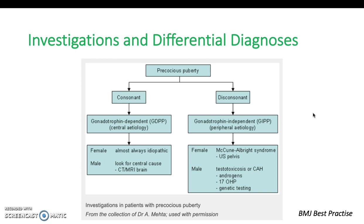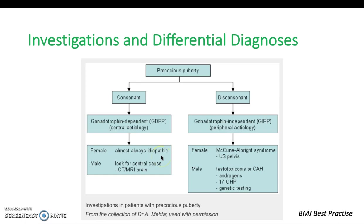These are the differential diagnoses laid out clearly — consonant GDPP versus dissonant GIPP, which are probably the most common categories. Notably, 90% of GDPP precocious puberty has no cause found — it's normally idiopathic, consistent with earlier puberty becoming more common. The dissonant causes are what you look for if central causes are excluded.